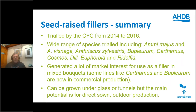Seed-raised fillers — we trialled these from 2014 to 2016 across a wide range of species including Ammi Majus and Visnaga, Anthriscus, Papaver, Carthamus, Cosmos, Dill, Euphorbia and Ridolfia. They generated quite a lot of market interest for use as fillers in mixed bouquets. Some lines — for example Carthamus and Papaver — are now in commercial production. Cosmos is probably not suitable due to difficulty in harvesting and vase life issues. Euphorbia's sap may well rule it out as potentially dangerous. The main potential is for direct-sown outdoor production, of which Carthamus and Papaver are good examples. You can grow from plugs, but plugs are only really suitable for protected production. Sequential sowings every 7 to 14 days are needed for continuity of supply.